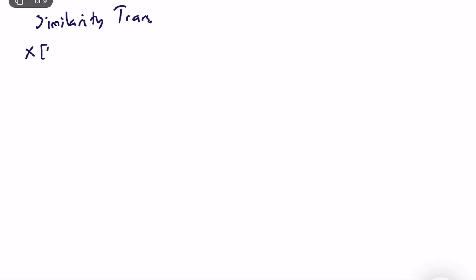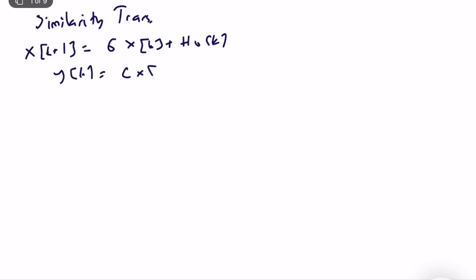Let's start with the state-space representation: x(k+1) is equal to G·x(k) plus H·u(k), and we have the output equation y(k) equal to C·x(k) plus D·u(k). It can be a SISO or MIMO system — it doesn't matter. This is a state-space representation for a given state definition.